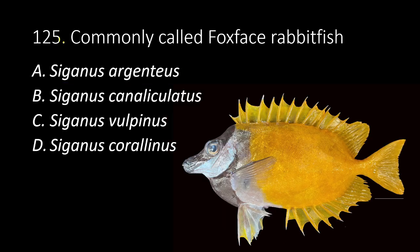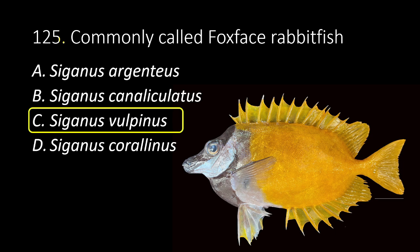125. Commonly called fox-face rabbit fish. A. Siganus argenteus. B. Siganus canaliculatus. C. Siganus vulpinus. D. Siganus corallinus. The answer is C, Siganus vulpinus.